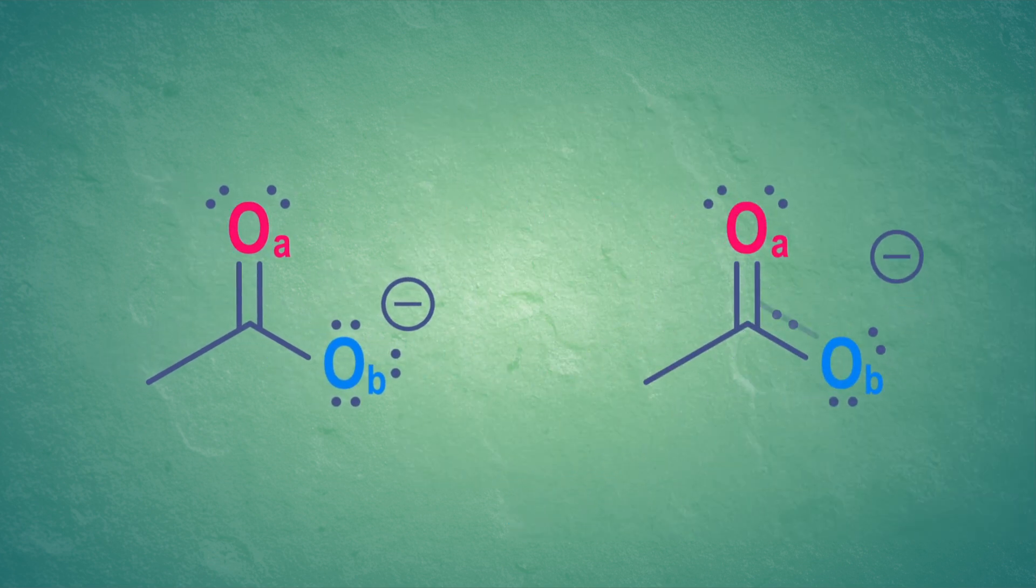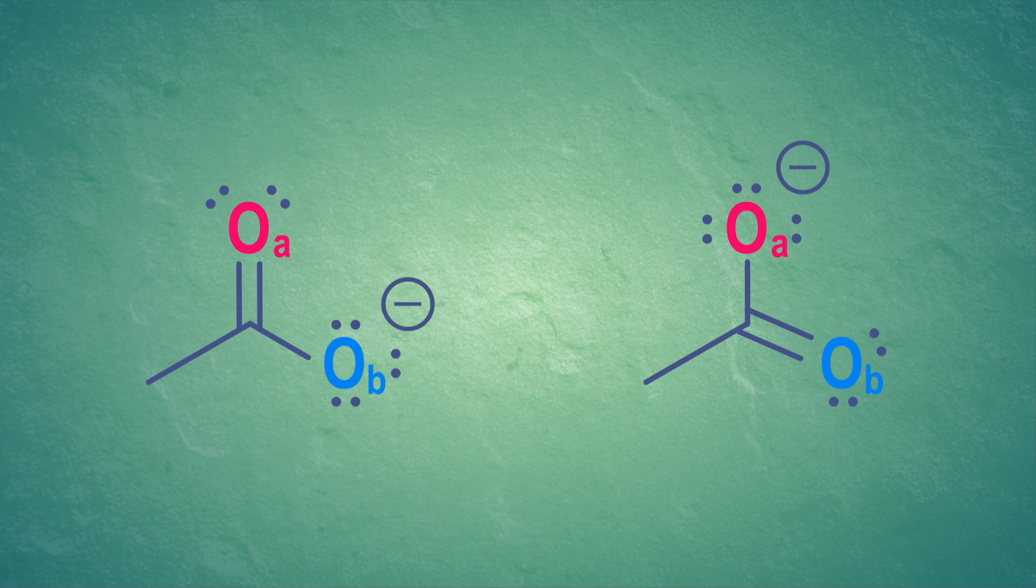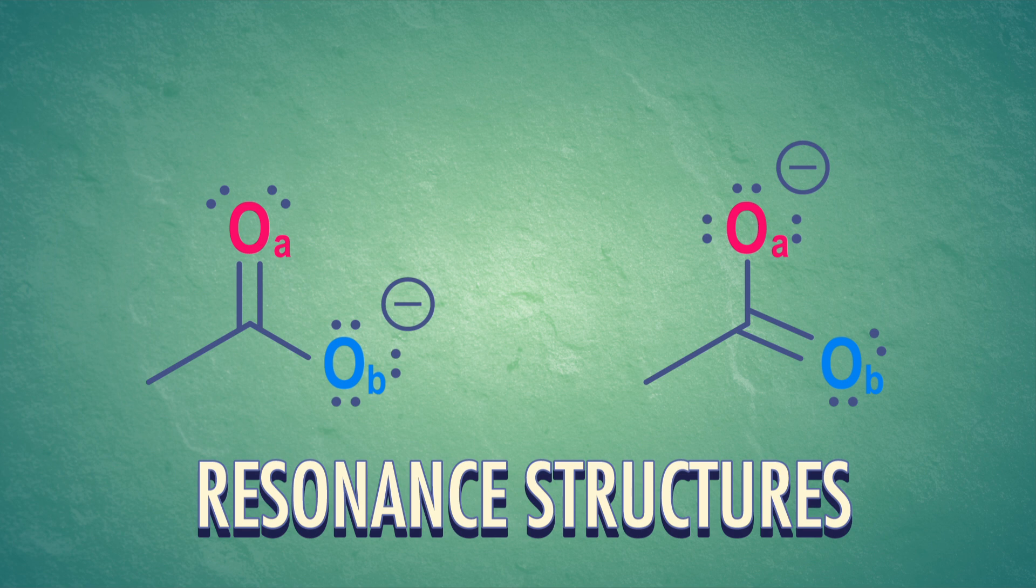But we can also draw another valid Lewis structure for acetate, where the other oxygen atom has the single bond and formal charge. These drawings are called resonance structures, which are representations of the compounds that differ, in this case, in the placement of lone pairs and pi bonds.